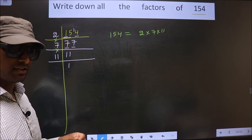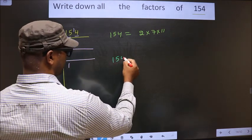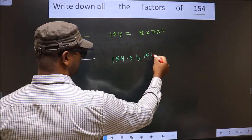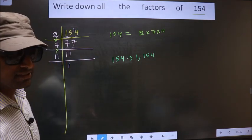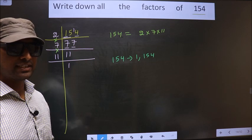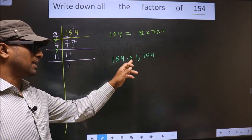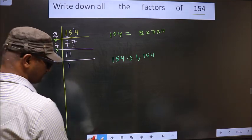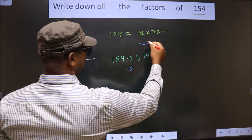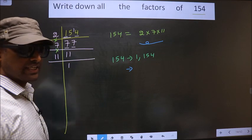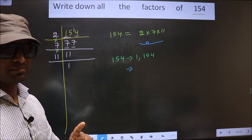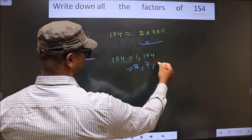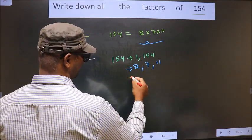So far, next. Any number you take will definitely include 1 and the number itself in its factors. I repeat, any number you take will definitely include 1 and the number itself in its factors. Now, from these numbers, you select one different number at a time. So we get 2, we get 7, and we get 11.